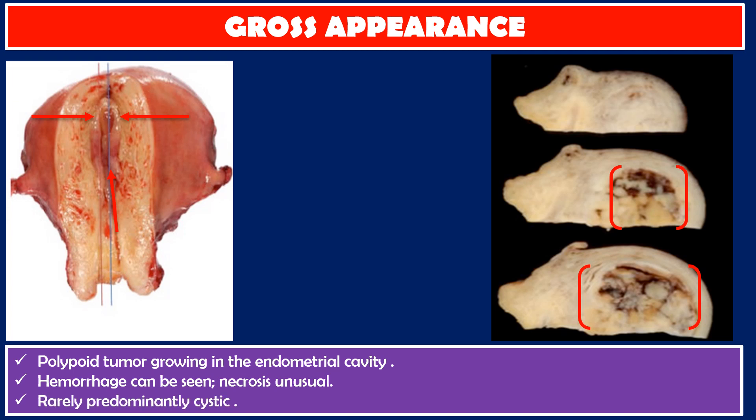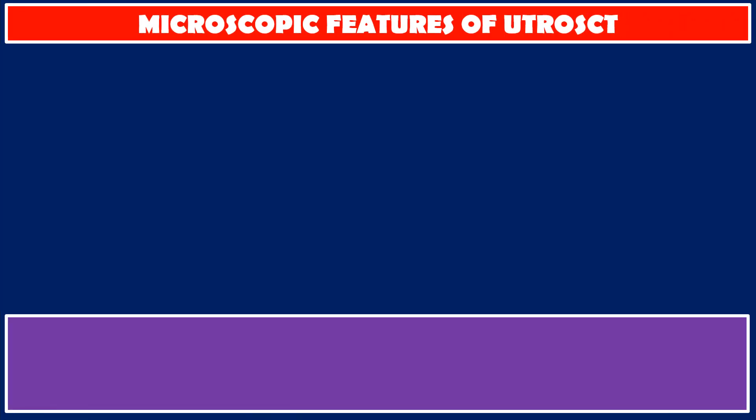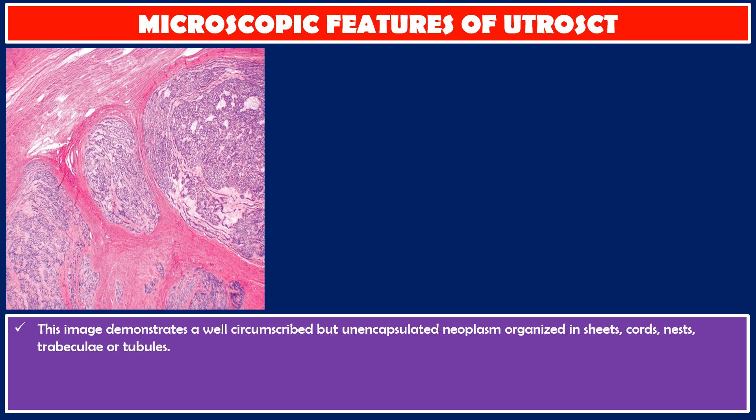Necrosis is unusual. Rarely, the tumor is predominantly cystic. Microscopic features of uterine tumor resembling ovarian sex cord tumor: this image demonstrates a well-circumscribed but unencapsulated neoplasm organized in sheets, cords, nests, trabeculae, or tubules.